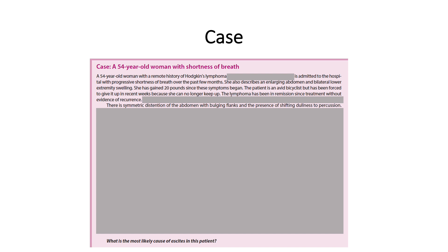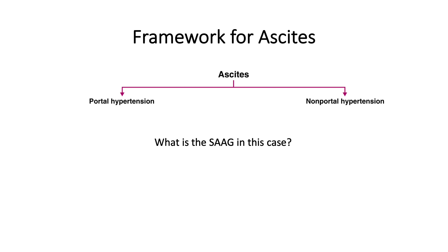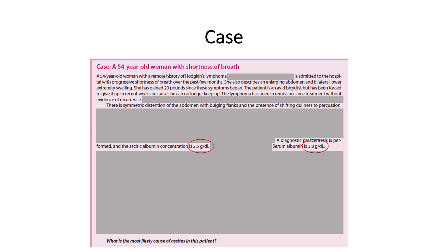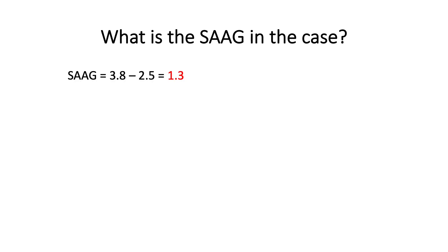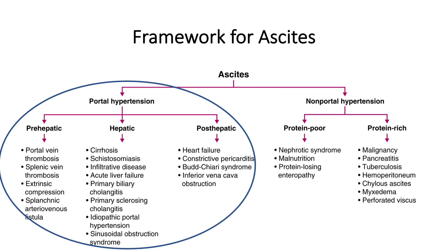Now that we're armed with a framework, we can revisit the case. The first thing we want to know is: what is the SAAG? We performed a paracentesis and find that the ascitic fluid albumin concentration is 2.5 g/dL, while the serum albumin concentration is 3.8 g/dL. When we perform the calculation, the SAAG is 1.3. This means we are dealing with portal hypertension — we have essentially cut our differential diagnosis in half, which puts us in a great position to solve the case.